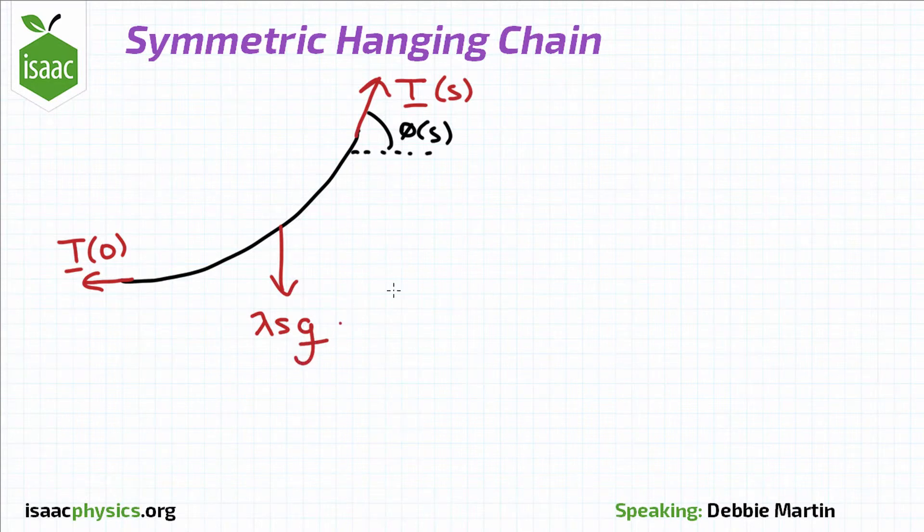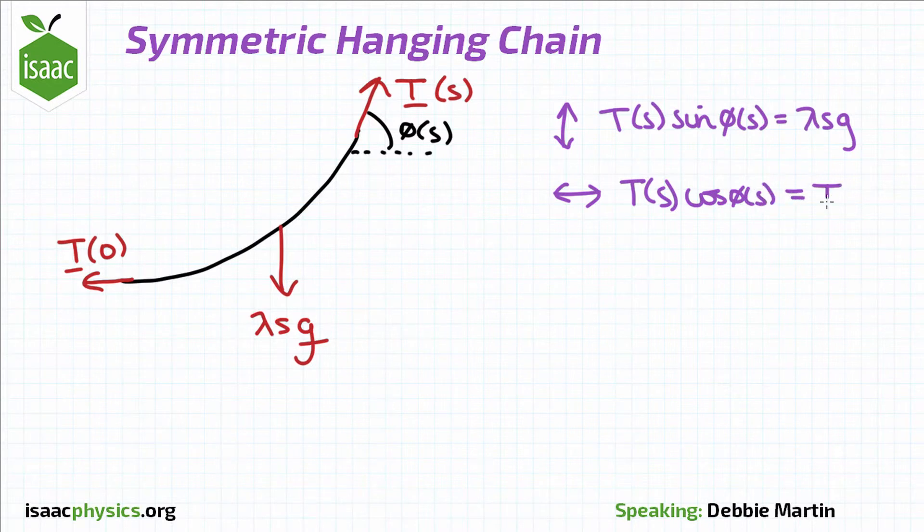Since the chain is hanging in equilibrium, we can resolve forces. Resolving vertically: T(s) sine φ(s) equals λsg. Resolving horizontally: T(s) cos φ(s) equals T(0).